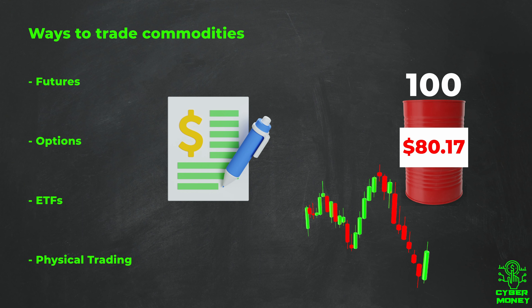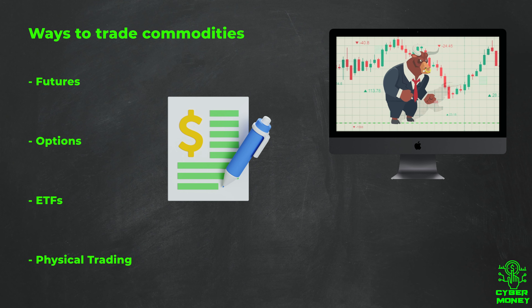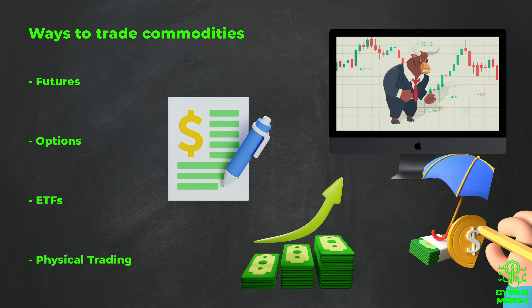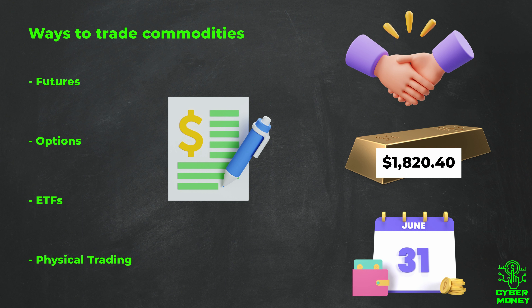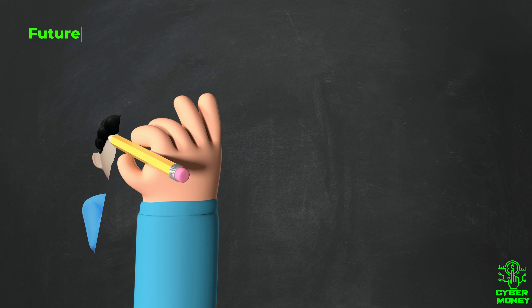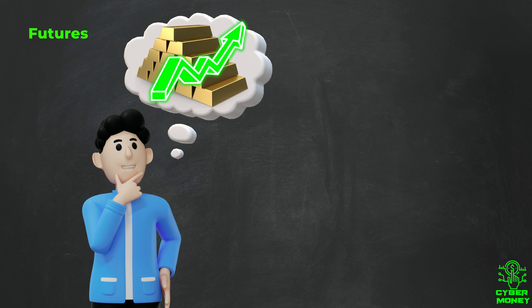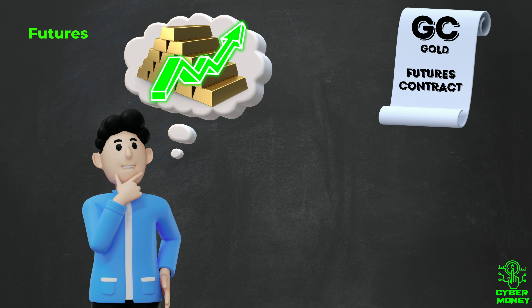Trading and investing in commodities through contracts is a way to gain exposure to the price movements of a specific commodity, allowing investors to potentially profit from price changes while also hedging against price risks. These contracts are agreements to buy or sell a specific amount of a commodity at a specific price and time in the future. For example, if you think the price of gold will go up in the next few months, you could buy a gold futures contract — an agreement to buy a certain amount of gold at a certain price on a specific date in the future. If gold prices go up, you'll be able to sell your contract for a profit.